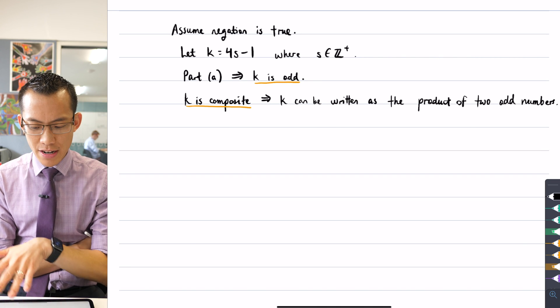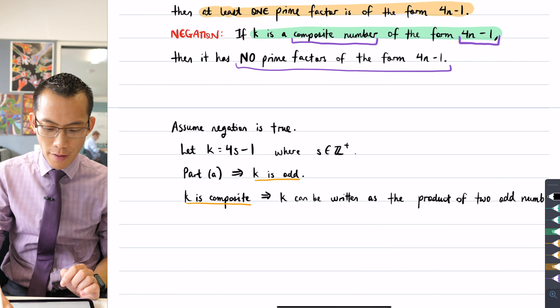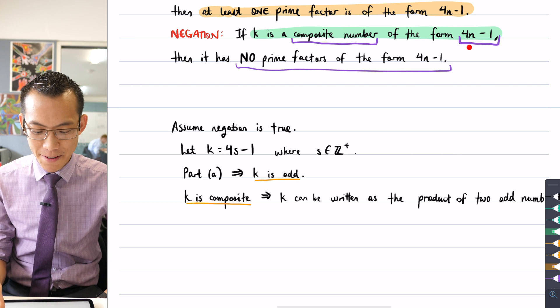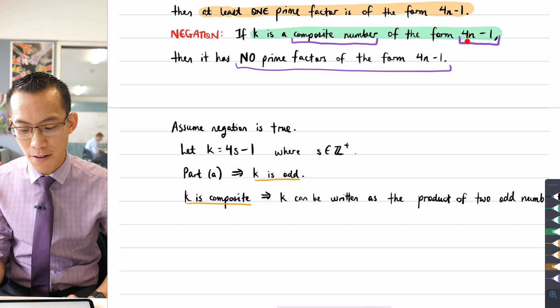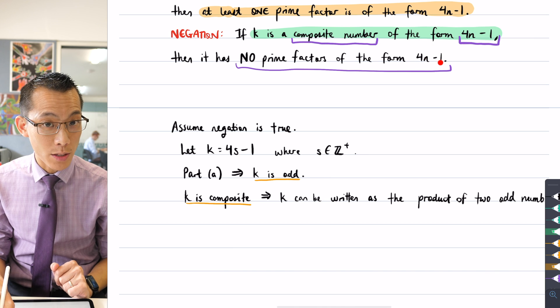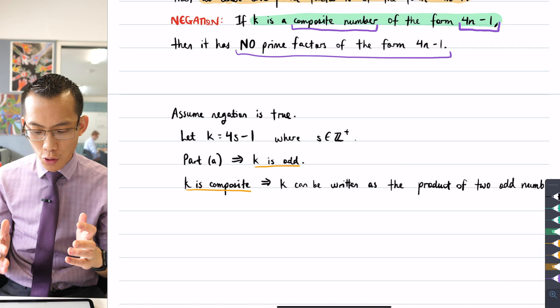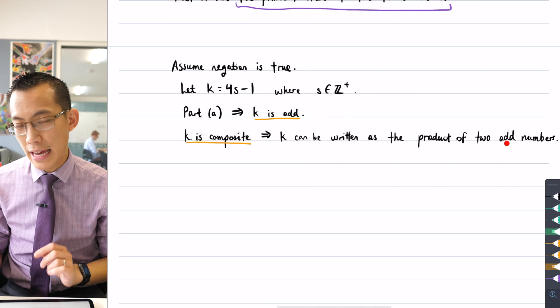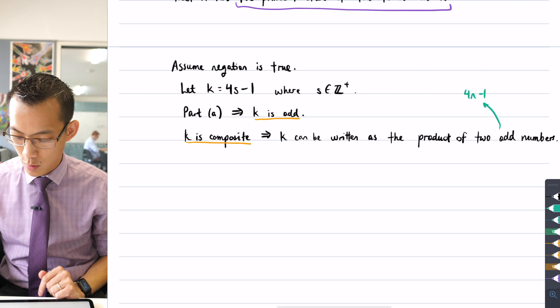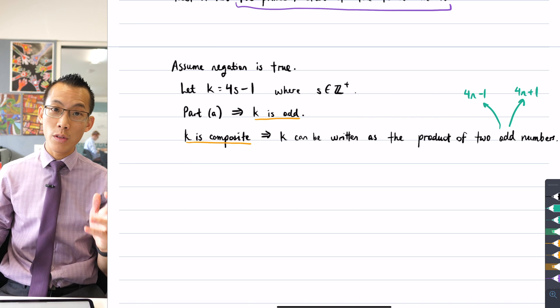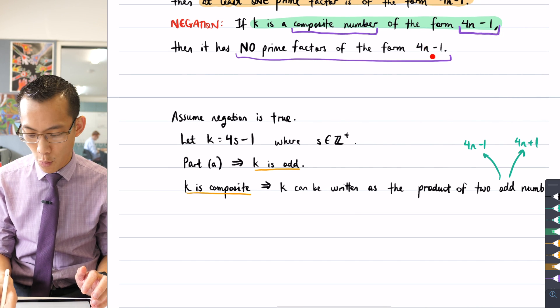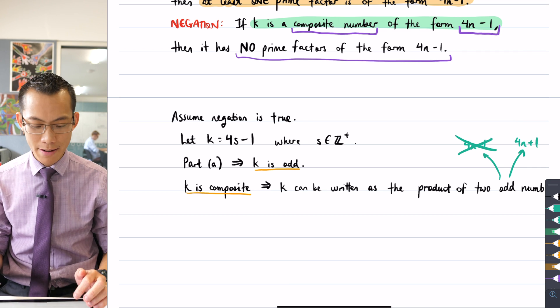So k being composite, if I put these two facts together, that k is odd and that k is composite, that means k can be written as the product of two odd numbers. Remember, no even numbers can squeeze in because as soon as you have a single even factor, the whole number ends up being even. So I've so far used the fact that k is composite and the assumption of the form 4n minus 1. What I haven't used is this assumption that none of the factors are of the form 4n minus 1.